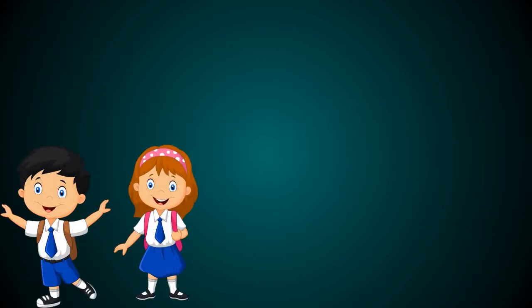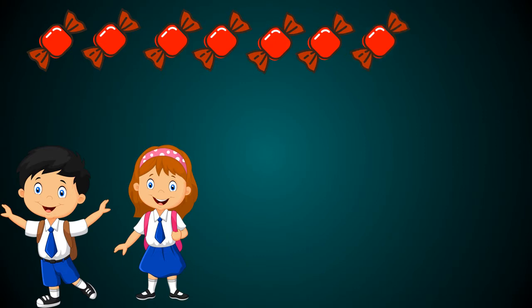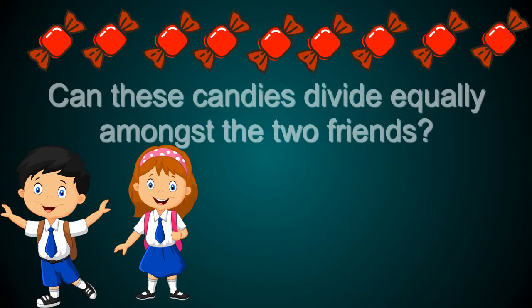Take a look at these two friends. They have one, two, three, four, five, six, seven, eight, nine pieces of candy. Can these candies divide equally amongst the two friends?